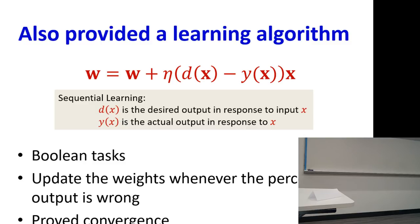Rosenblatt also provided a learning algorithm for this, which we're going to see again in a couple of classes. The connection between an input and an output would have some weight, and the learning process was: if the current output of the unit did not match the desired output, then the difference between the two multiplied by the current input was added to the current weight. This learning rule is very popular — we use this all over the place in machine learning. Frank Rosenblatt was one of the first people to define it.